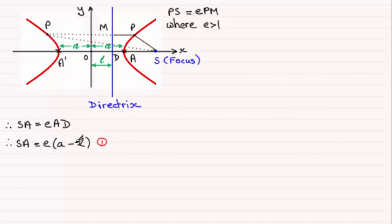Now I need another equation and I'm going to look at S to A dash. That's when P is at this point here. So we know that SA dash must equal E times A dash D. By this definition here, remember P will be at A dash at one instant.